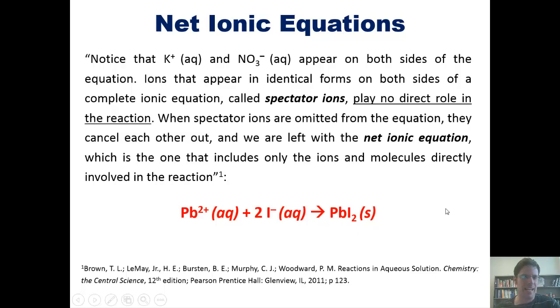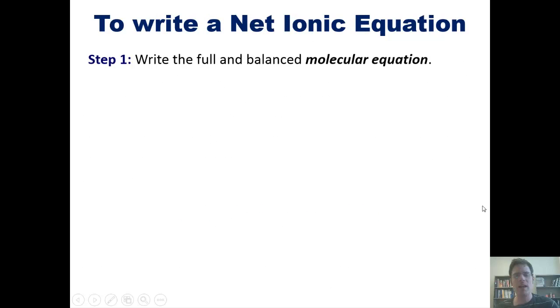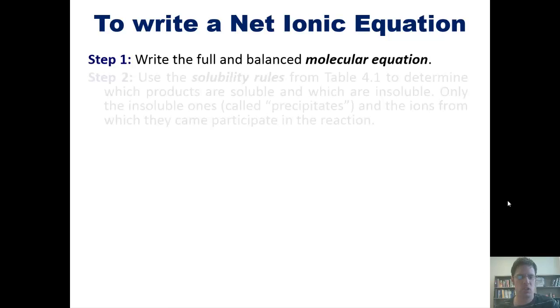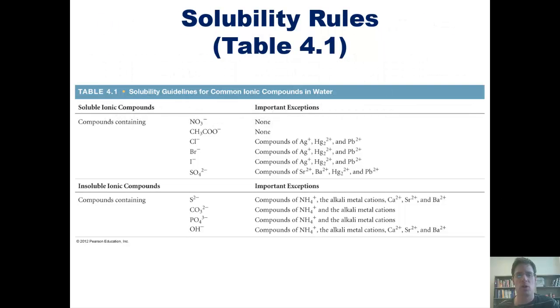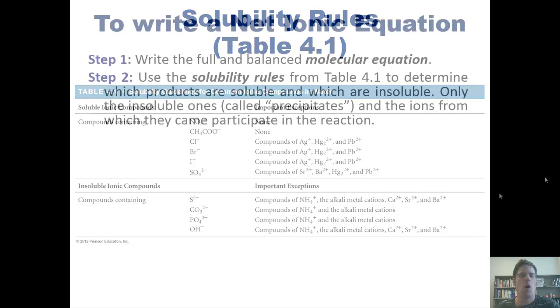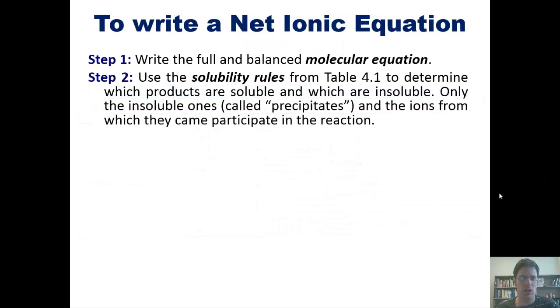So how in the world do we write a net ionic equation? Allow me to teach you. Step 1: Write the full and balanced molecular equation, which I showed you for this lead iodide example a few slides ago. Step 2: Use the solubility rules from Table 4.1, which I'm going to show you right here, to determine which products are soluble and which ones are insoluble. Only the insoluble ones, which are called precipitates, and the ions from which they came, participate in the reaction.